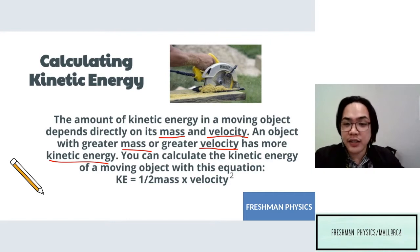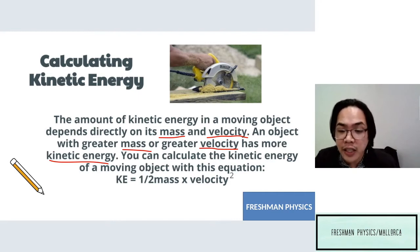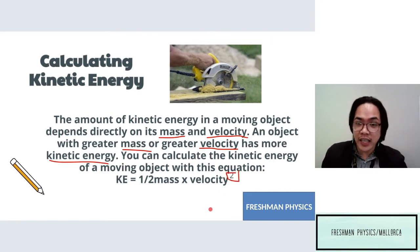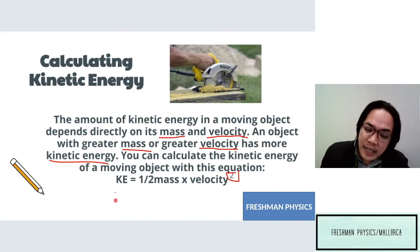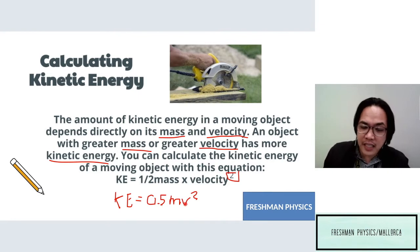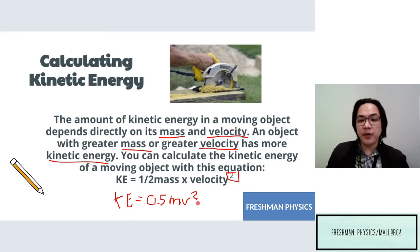In calculating for kinetic energy, there is a formula that we need to follow, and this formula includes your mass and velocity. That formula is: kinetic energy equals one-half times mass times velocity squared. It can also be written as KE = 0.5mv², because one-half is equivalent to 0.5. When letters are just beside each other with no spaces, that means automatic multiplication: 0.5 times mass times velocity squared.